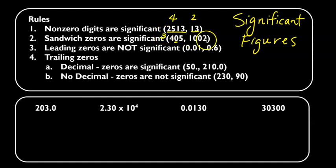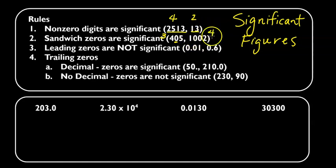1,002 — the zeros are sandwich zeros, so they are significant. So we have 1, 2, 3, 4 — this has four significant figures.